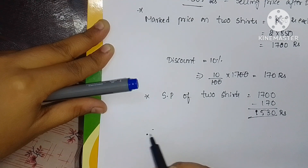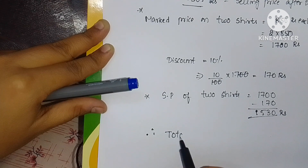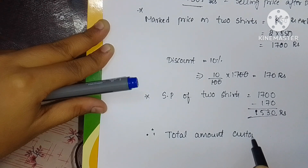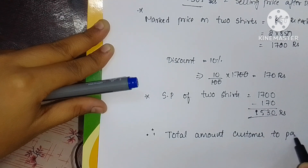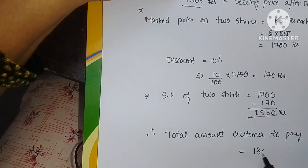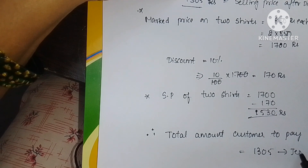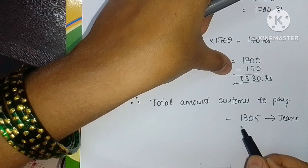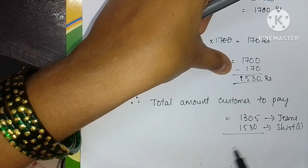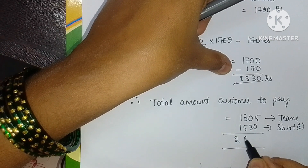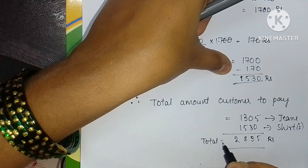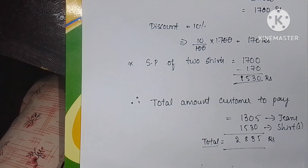Therefore, the total amount the customer has to pay is 1305 rupees for the jeans plus 1530 rupees for the two shirts, which equals rupees 2835 total. This is the amount the customer pays after the 10% discount on the jeans and shirts.